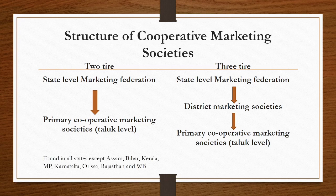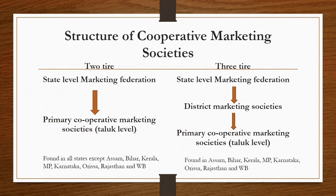The two-tier system is found in all states except Assam, Bihar, Kerala, Madhya Pradesh, Karnataka, Orissa, Rajasthan, and West Bengal. So except these states, all other states follow the two-tier system. The three-tier system is followed in Assam, Bihar, Kerala, Madhya Pradesh, Karnataka, Orissa, Rajasthan, and West Bengal.